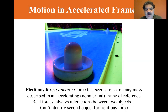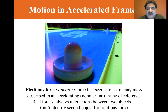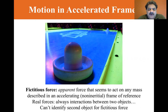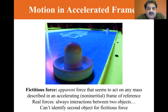Real forces are always interactions between objects, and you can't identify the second object for a fictitious force. A fictitious force appears to act on an object in the same way as a real force. In general, simple fictitious forces appear to act in a direction opposite the acceleration of the non-inertial frame.